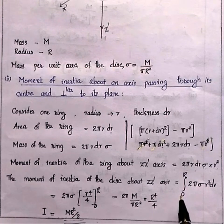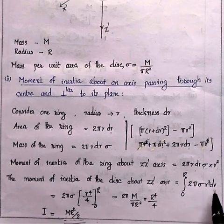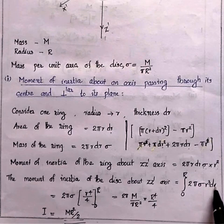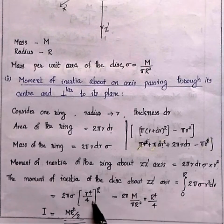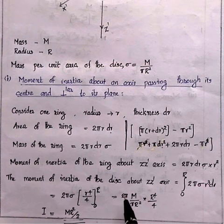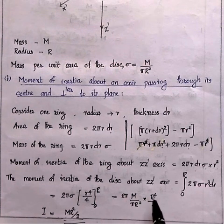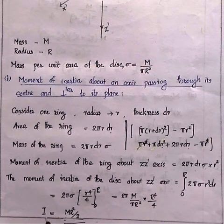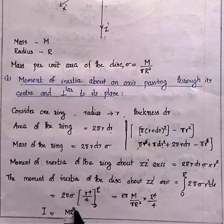Integrating from 0 to R: I = ∫(0 to R) 2πσr³·dr = 2πσ·[r⁴/4] from 0 to R. Substituting σ = M/(πR²): I = 2π·(M/πR²)·R⁴/4 = MR²/2. The moment of inertia of a thin circular disk about an axis through its center and perpendicular to its plane is MR²/2.